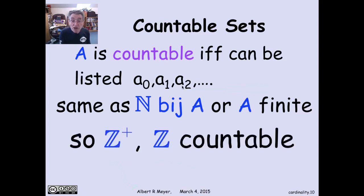So what we've just figured out then from the previous examples is that the positive integers are countable, and all the integers are countable, because in both cases we exhibited bijections to the non-negative integers.